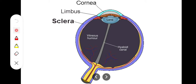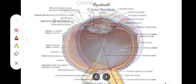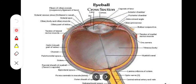The sclera is important because it gives insertion to the various muscles of the eyeball. The recti muscles attach at the anterior aspect of the sclera, while the oblique muscles attach posteriorly. We can also see the sclerocorneal junction and the canal of Schlemm in this region.